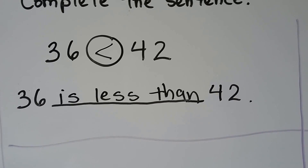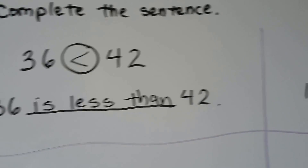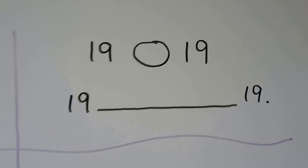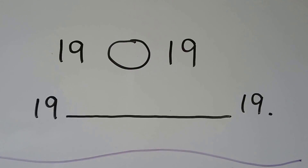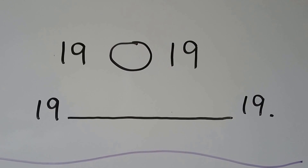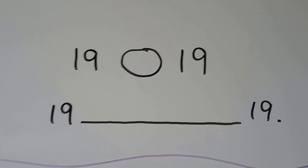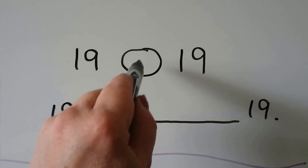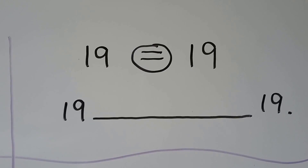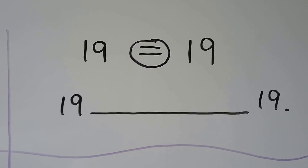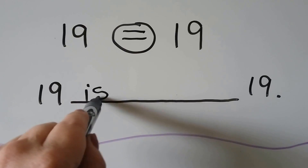Let's try this one. We have 19 and 19 — they're the same number. They have the same tens and they have the same ones. 19 is equal to 19.